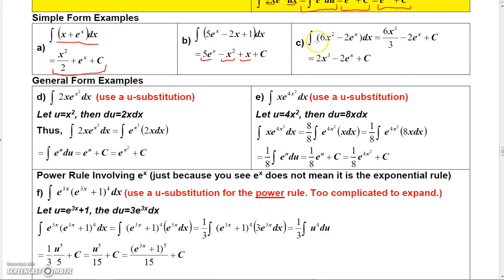One more. If you integrate 6x squared, you get 6x cubed over 3. And when you integrate minus 2e to the x, you get minus 2e to the x plus a constant. That simplifies to 2x cubed minus 2e to the x plus a constant.